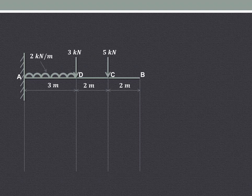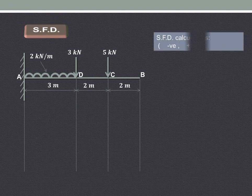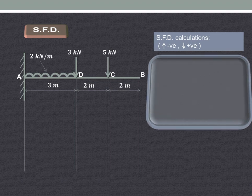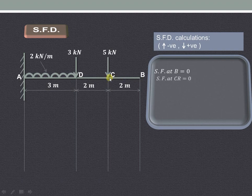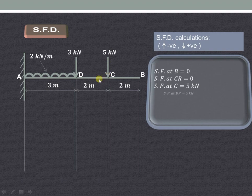Let us first start with the shear force diagram. The conventions we are using: upward force is considered as negative, whereas downward force is considered as positive. Shear force at B will be zero because there is no force acting there. Just at the right of C it is also zero because there is no force acting between B and C.